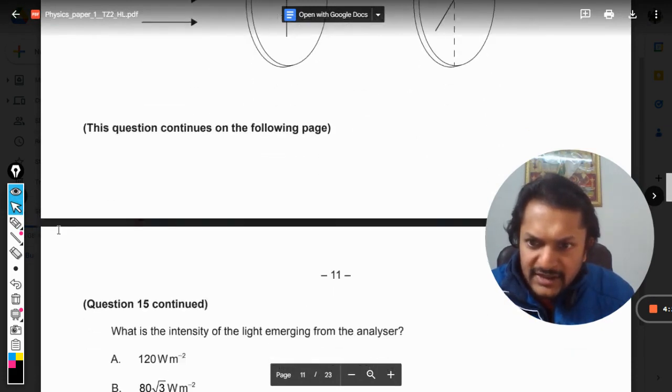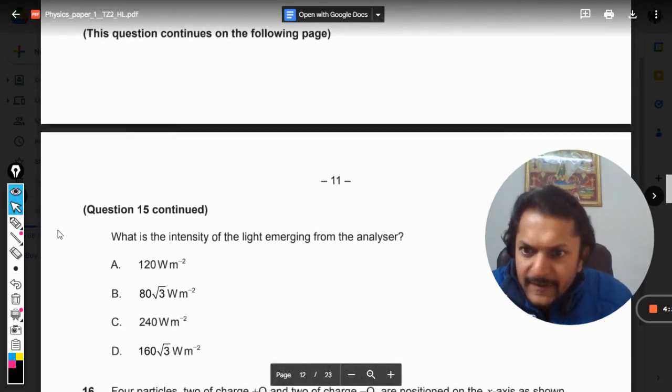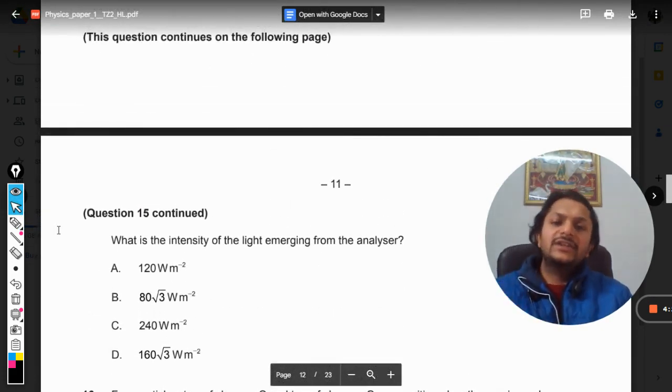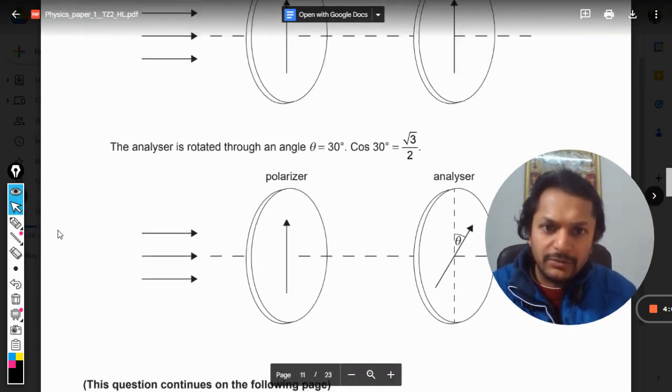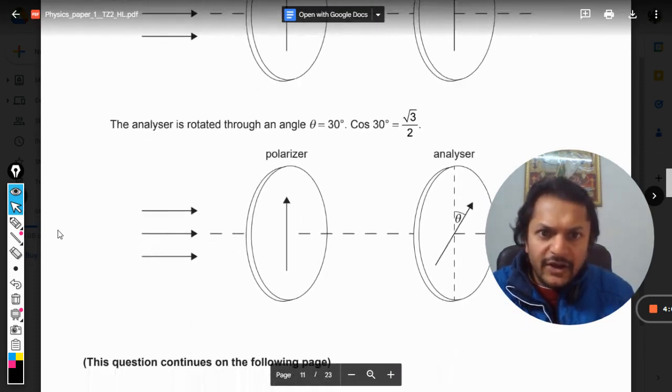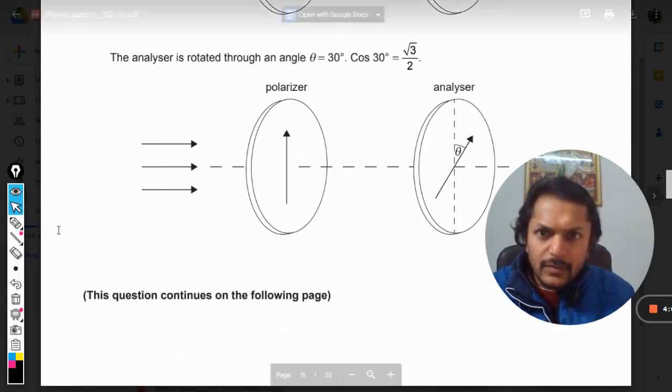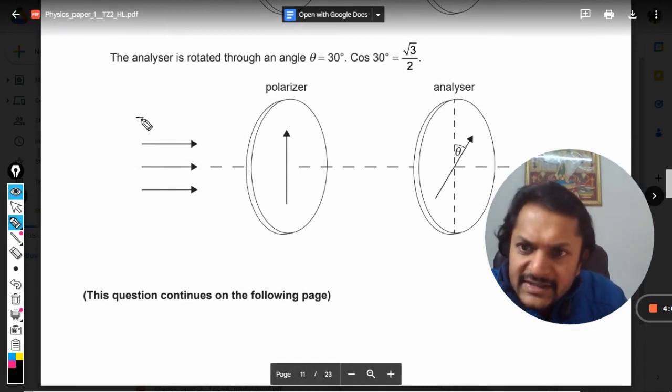And then what is next? What is the intensity of the light emerging from the analyzer? Okay, the light that is emerging from the analyzer, fine, no problem. So this is 320 watts per meter square.